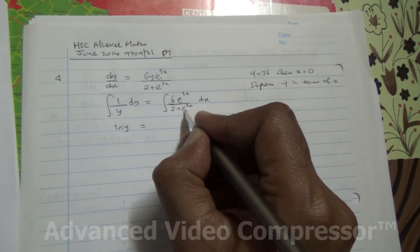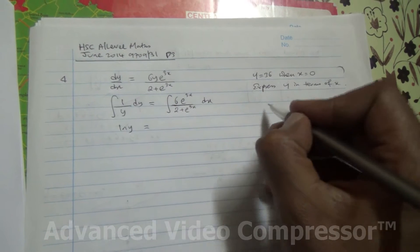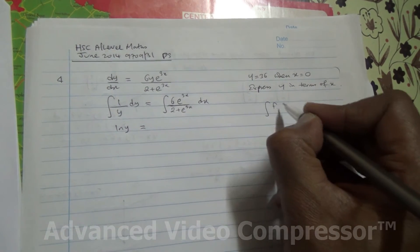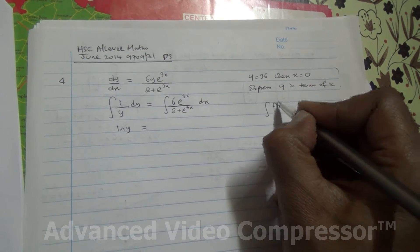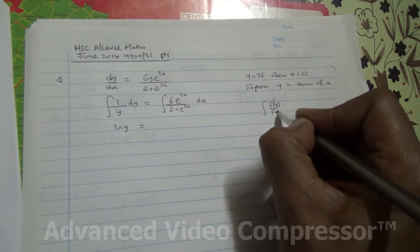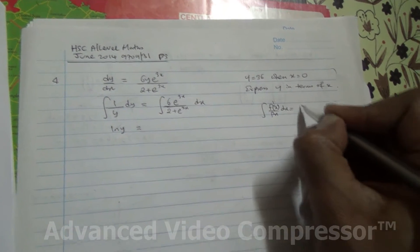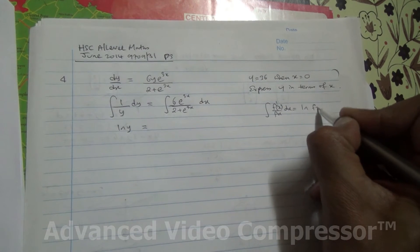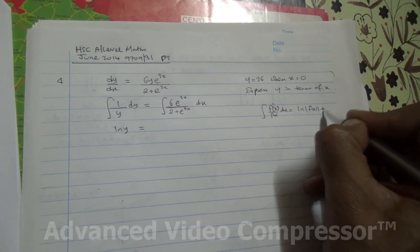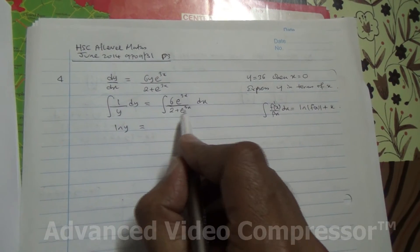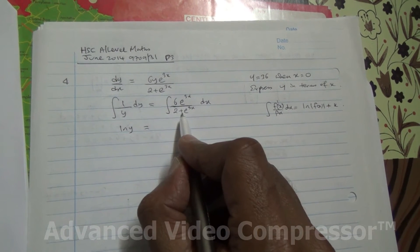what is the integral of this one? We've got, this is of the form of, integral of f dash x, f dash x over fx dx is equal to ln fx plus k.